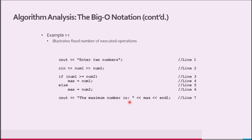Consider the following algorithm — Example 1-1. Assume that all variables are properly declared. Let us identify the number of operations per line. On line 1, cout 'enter two numbers' — one operation. On line 2, cin num1 and num2 — two operations. On line 3, if num1 is greater than or equal to num2 — one operation, comparing num1 and num2.